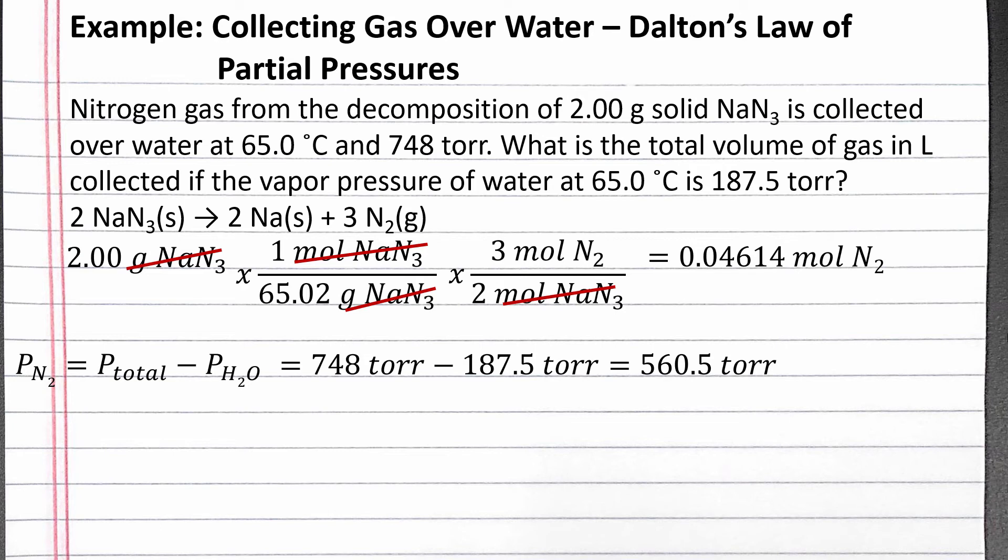When we put this partial pressure into the ideal gas law equation, it must be in atmospheres. So we can divide 560.5 torr by 760 torr for 1 atmosphere, and we'll get 0.7375 atmospheres of nitrogen gas.